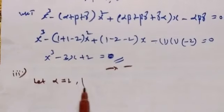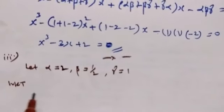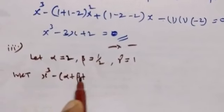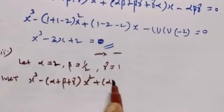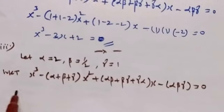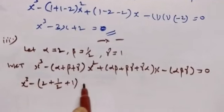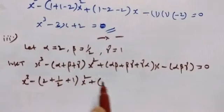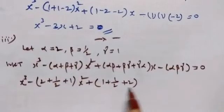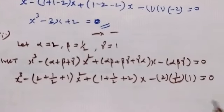Let alpha equal to 2, beta equal to 1/2, gamma equal to 1. Using the general form of cubic polynomial: x³ minus (alpha + beta + gamma)x² plus (alpha·beta + beta·gamma + gamma·alpha)x minus alpha·beta·gamma equal to 0. Substituting: x³ minus (2 + 1/2 + 1)x² plus (2×(1/2) + (1/2)×1 + 1×2)x minus 2×(1/2)×1 equal to 0.